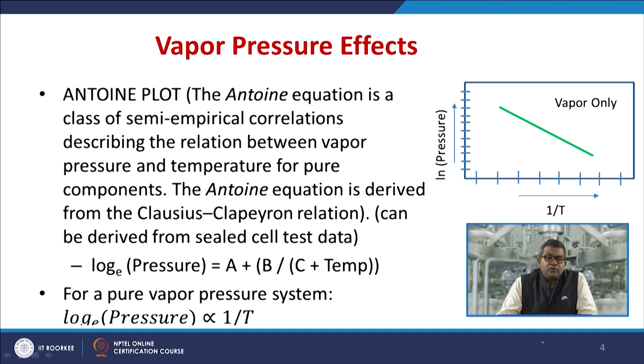The need for this relationship arises because temperature sometimes is a safe limit, but this temperature may create the problem of overpressure. Whenever we talk about the relationship between temperature and pressure, we must have certain correlations, and the Antoine equation provides the solution for this.